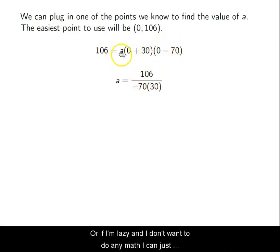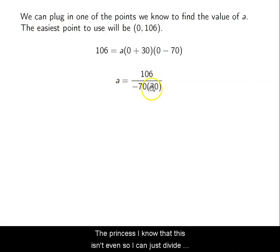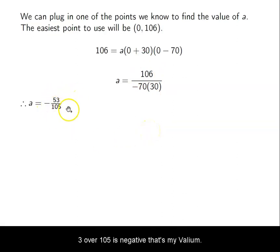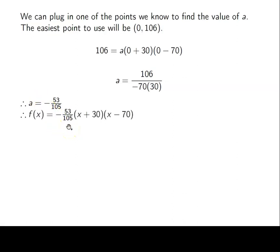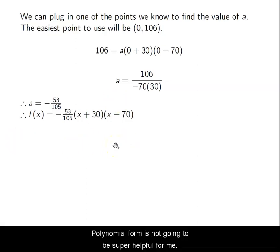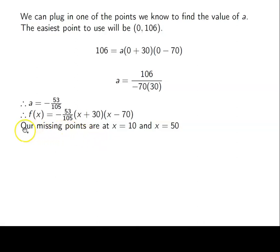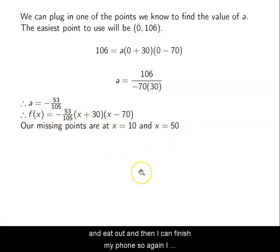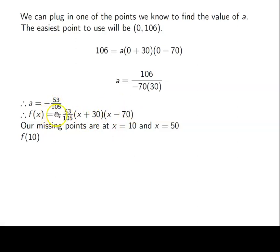I can just move things around and simplify. I know this isn't even, so I can divide to get 53 over 105, which is negative. That's my value of a. So my function is f(x) = negative 53/105 times (x minus 70) times (x plus 30). I could multiply it all out and expand it, but I don't really need to — I just need a working function. The points I need are 10 and 50, so I'll plug in 10 and 50 to get the outputs I need.